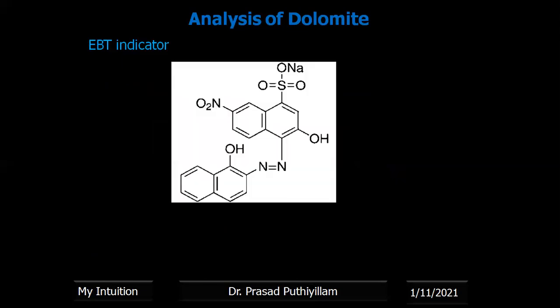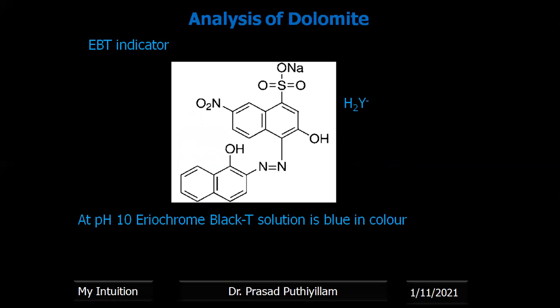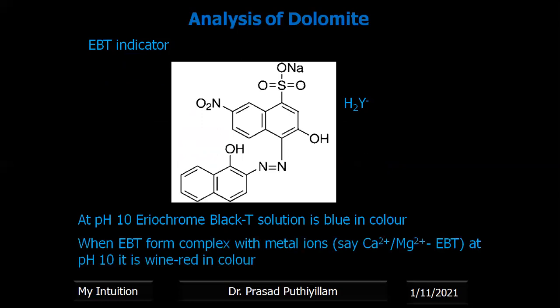EBT indicator — Eriochrome Black T — its structure can be represented as H₂Y⁻ when writing a reaction. The two hydroxyl hydrogens are indicated as H₂, and the remaining structure is represented as Y with a negative charge. At pH 10, Eriochrome Black T indicator solution is blue in color. When it forms a complex with metal ions like calcium or magnesium, the metal–EBT complex at pH 10 is wine red in color. This color change when forming a complex with a metal ion can be used to estimate the amount of calcium or magnesium concentration in solution.